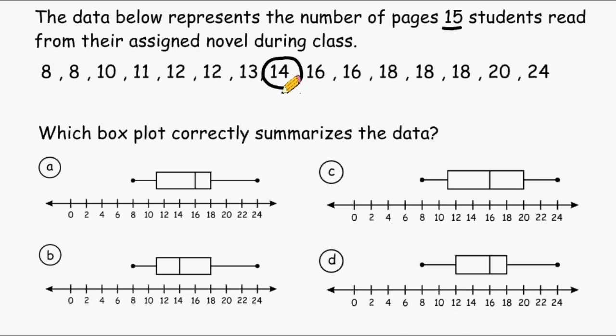And the reason we did that is because if I were to take away this median, which is one of the 15 numbers, we would have 14 numbers remaining. And if we divide 14 by 2, that would tell us how many numbers we have before the median and how many numbers we have after the median.